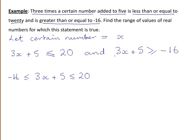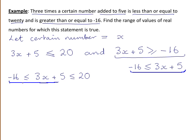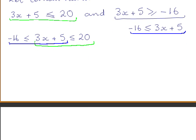To see this more clearly: if 3x plus 5 is greater than or equal to minus 16, then minus 16 is less than or equal to 3x plus 5. And we already had that 3x plus 5 is less than or equal to 20. So the combined inequality is minus 16 less than or equal to 3x plus 5 less than or equal to 20.